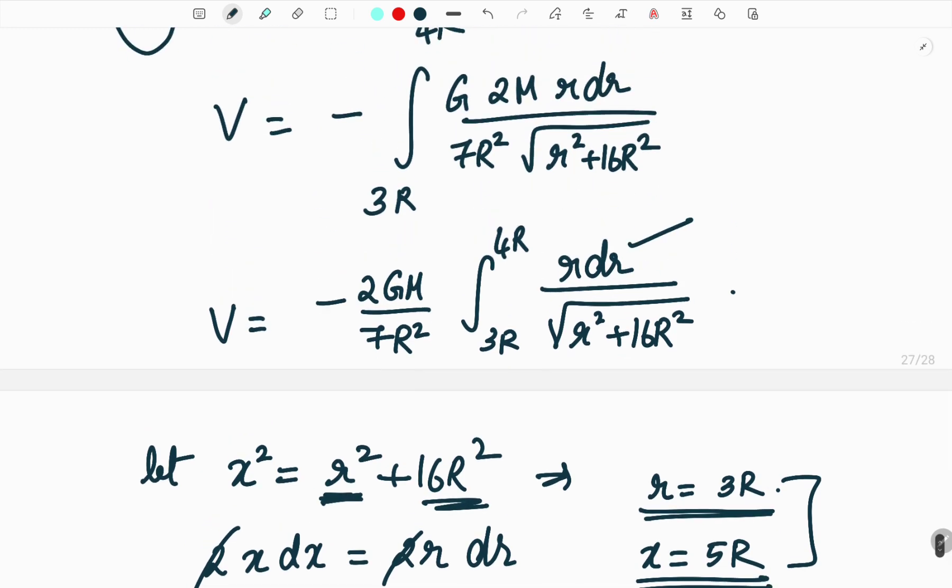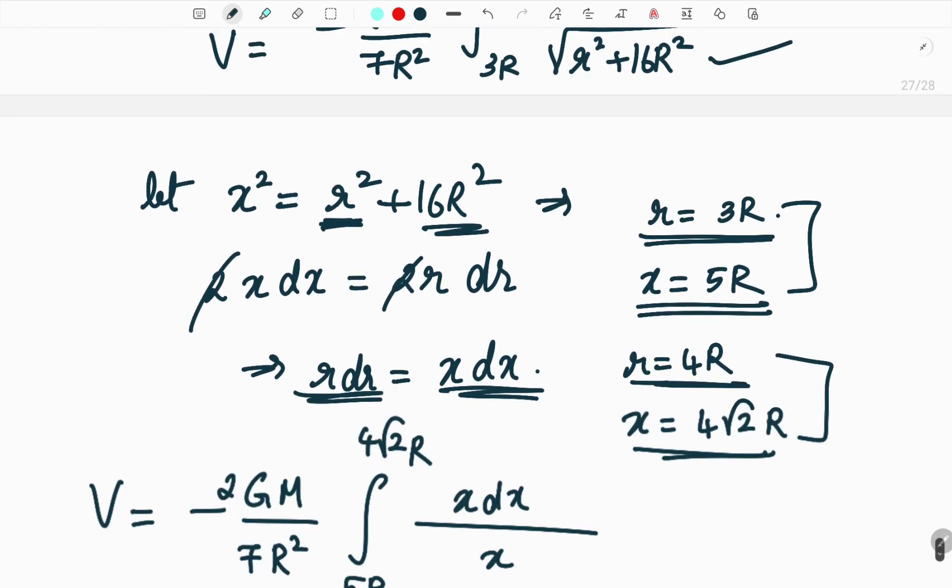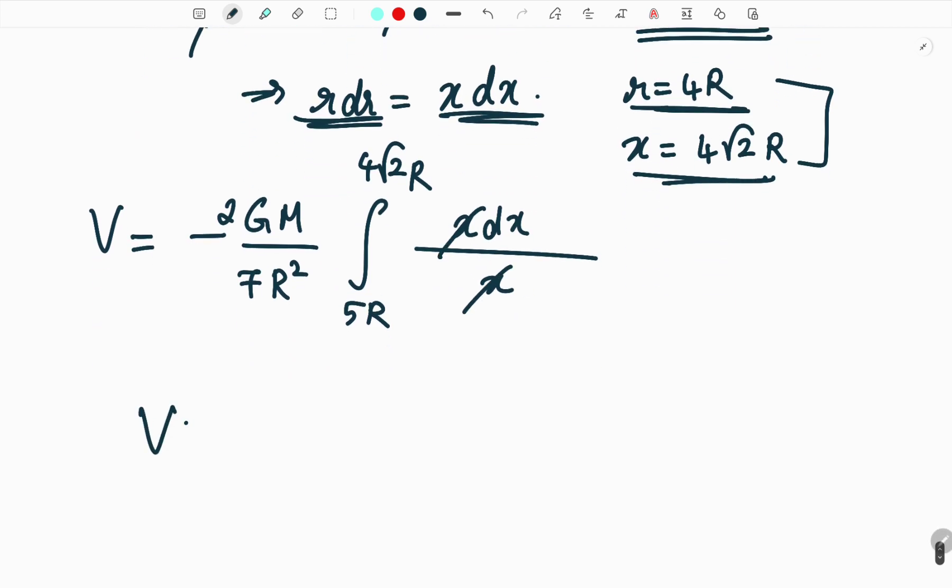So here we have substituted r dr by x dx and this is equal to x and we have changed the limits from r1 to r2 we have changed it to x1 to x2. So this x will get cancelled. Hereafter it is just simple simplification.